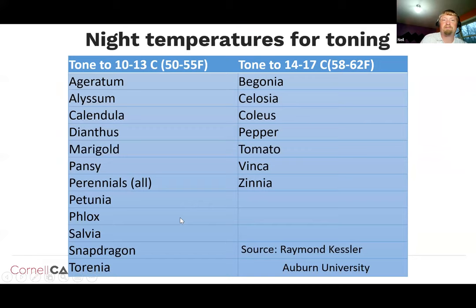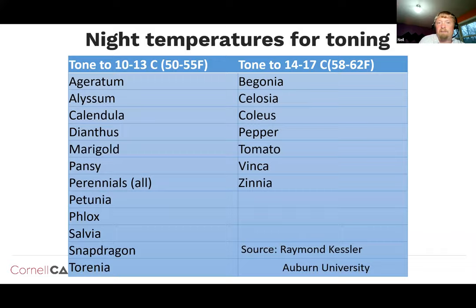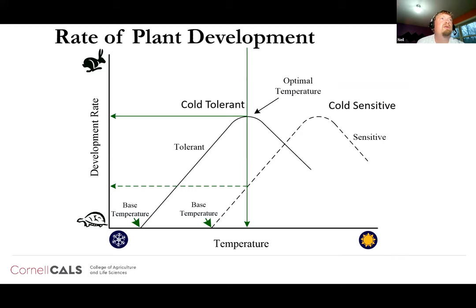Our more cold tolerant plants — with 10–13°C night temperature — include many common bedding plants: ageratum, calendula, dianthus, marigold, pansies, herbaceous perennials, petunias, salvia, and snapdragons. More cold sensitive crops like begonia, celosia, and coleus should be kept at 14–17°C for their night temperature.